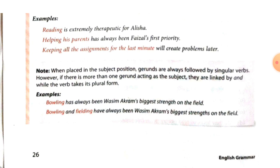So, students, when placed in the subject position, gerunds are always followed by a singular verb. However, if there is more than one gerund acting as a subject, they are linked by and while the verb takes its plural form. For example: Bowling has always been Wasim Akram's biggest strength on the field — here, has is used because there is only one gerund, bowling.